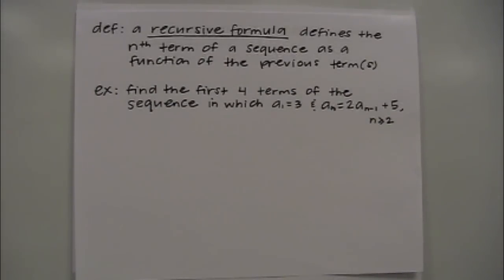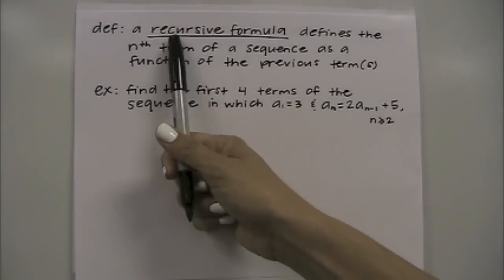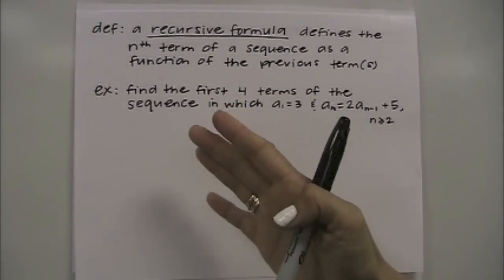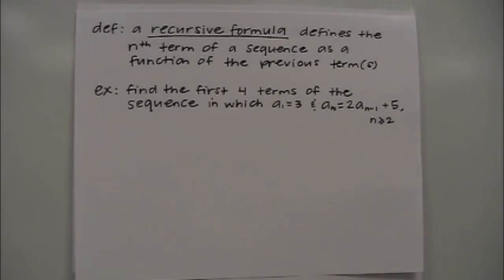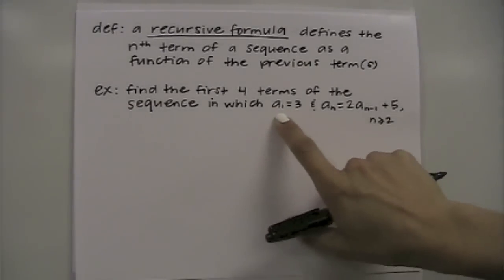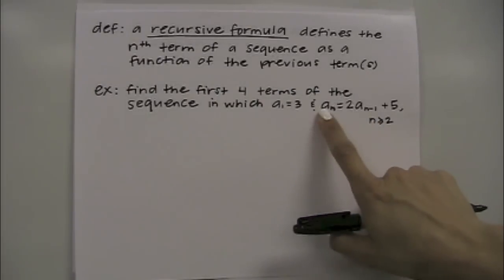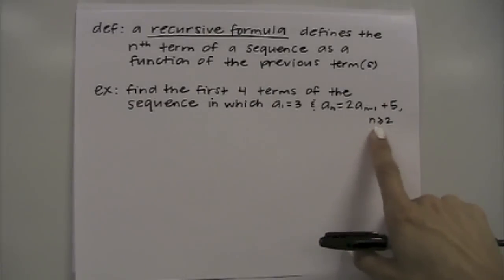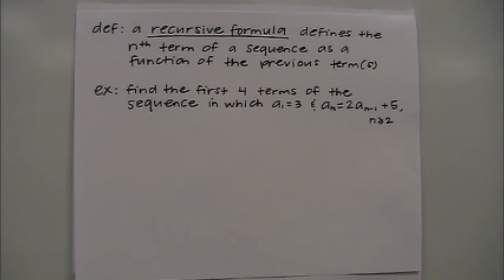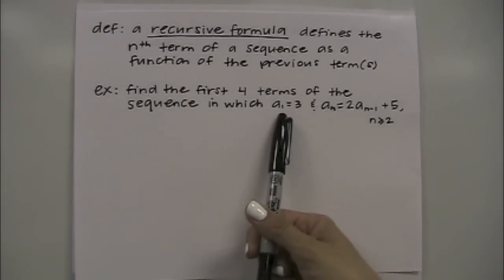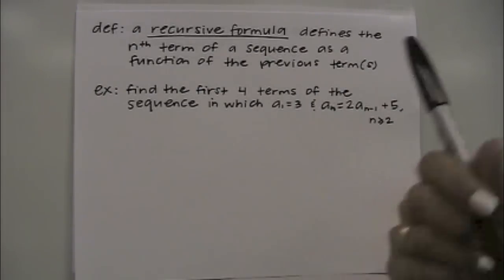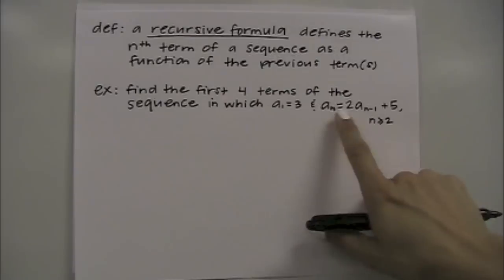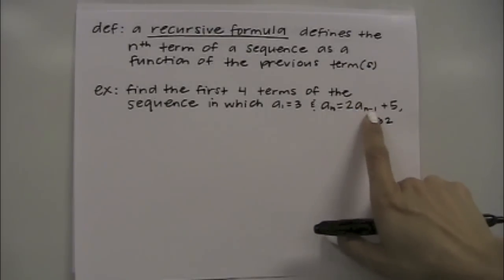A recursive formula defines the nth term of a sequence as a function of the previous terms. Basically, to find a following term you need to use one of the terms before it. This example says find the first four terms, given a sub 1 equals 3, and the formula a sub n equals 2 times a sub n minus 1 plus 5, for n greater than or equal to 2. We're already given the first term. For a sub 2, note that a sub n minus 1 is the term right before the current term.